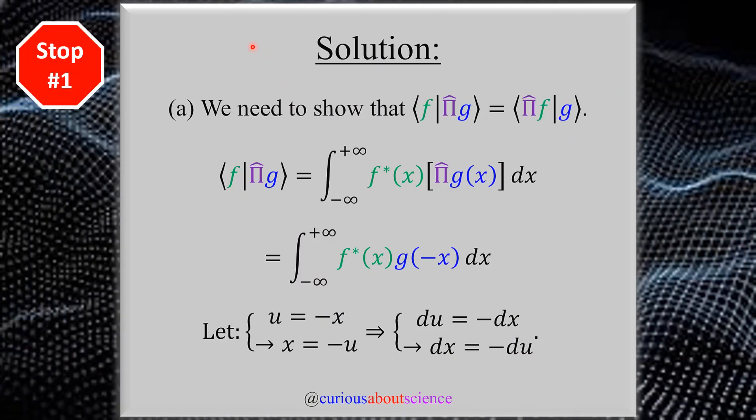All right, so clearly in stop one, this will be pretty quick. All we're trying to do is prove the hermicity of the parity operator, which is defined by this statement here, which we saw back in chapter three with equation 3.17. By remembering that we have to use an inner product to show that we can maneuver this parity operator, let's just let it act on g.